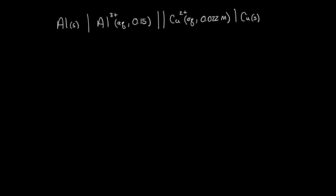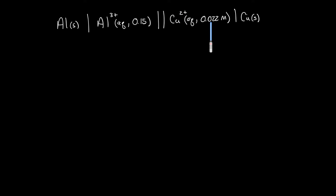In this example, we have aluminum solid and aluminum three-plus at 0.15 molar on the anode side, and copper two-plus at 0.022 molar with solid copper on the cathode side. You'll typically see this format later when studying electrochemistry in more depth, particularly when learning about the Nernst equation, where those concentrations are needed.